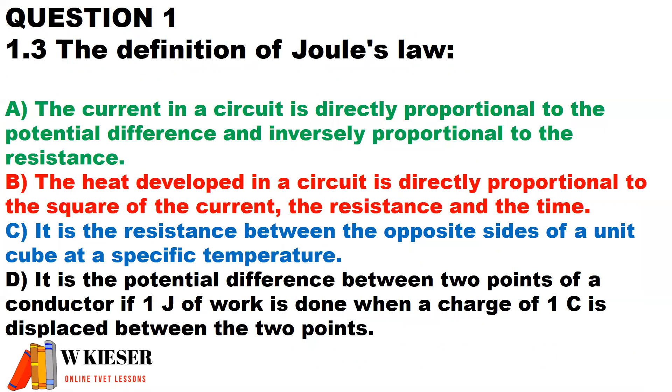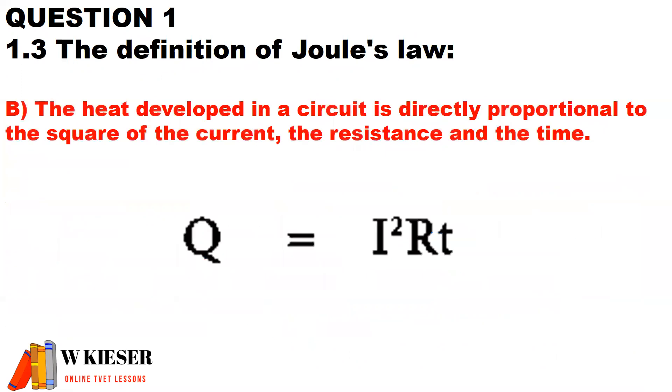In the following statement, the definition of Joule's law states that the heat developed in a circuit is directly proportional to the square of the current, the resistance, and the time that current flows.